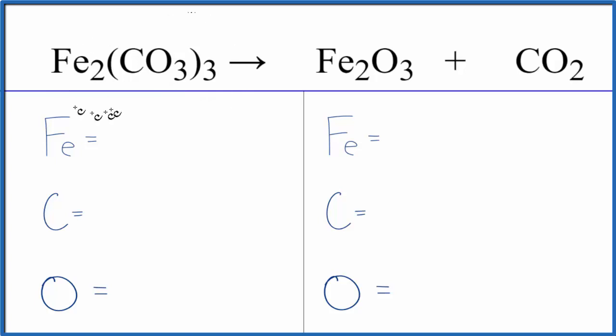We do need to be careful here. So we have two iron atoms. This three, it applies to the whole carbonate ion. So we have three times the one carbon, we have three carbons, and then three times the three oxygens. Three times three is nine oxygens.